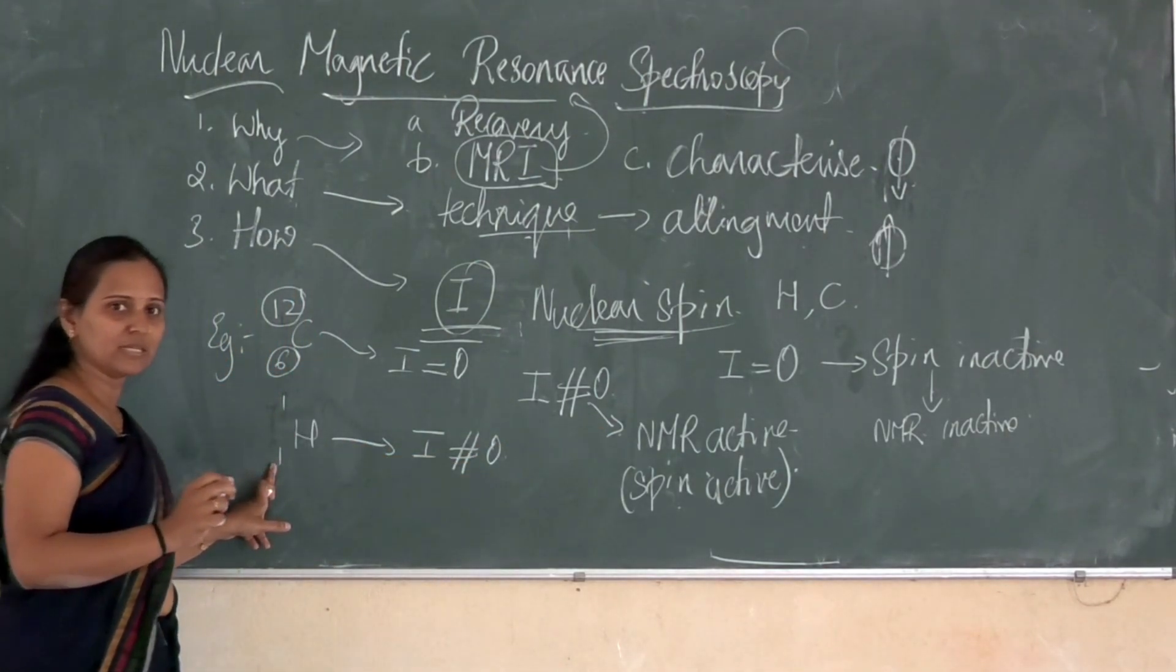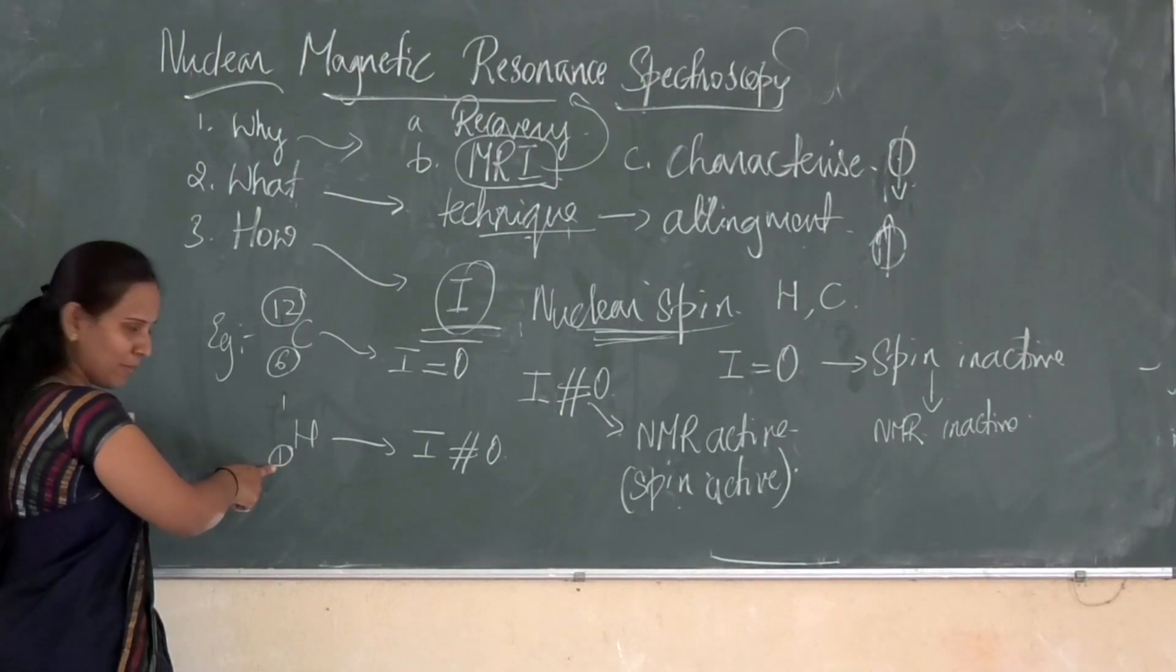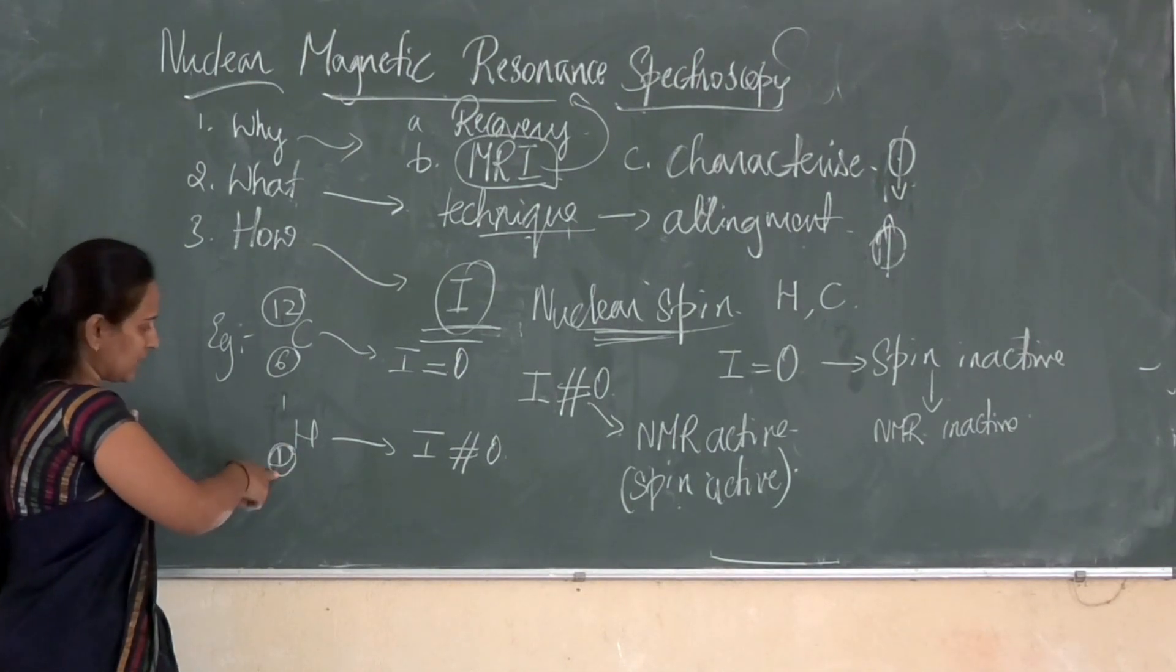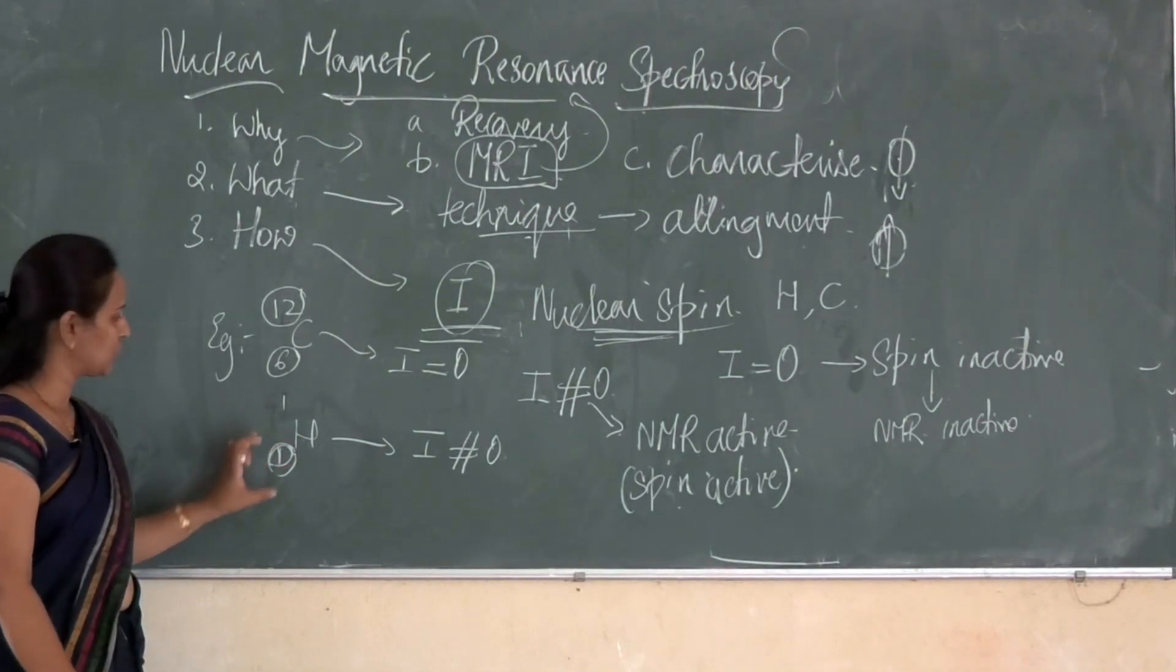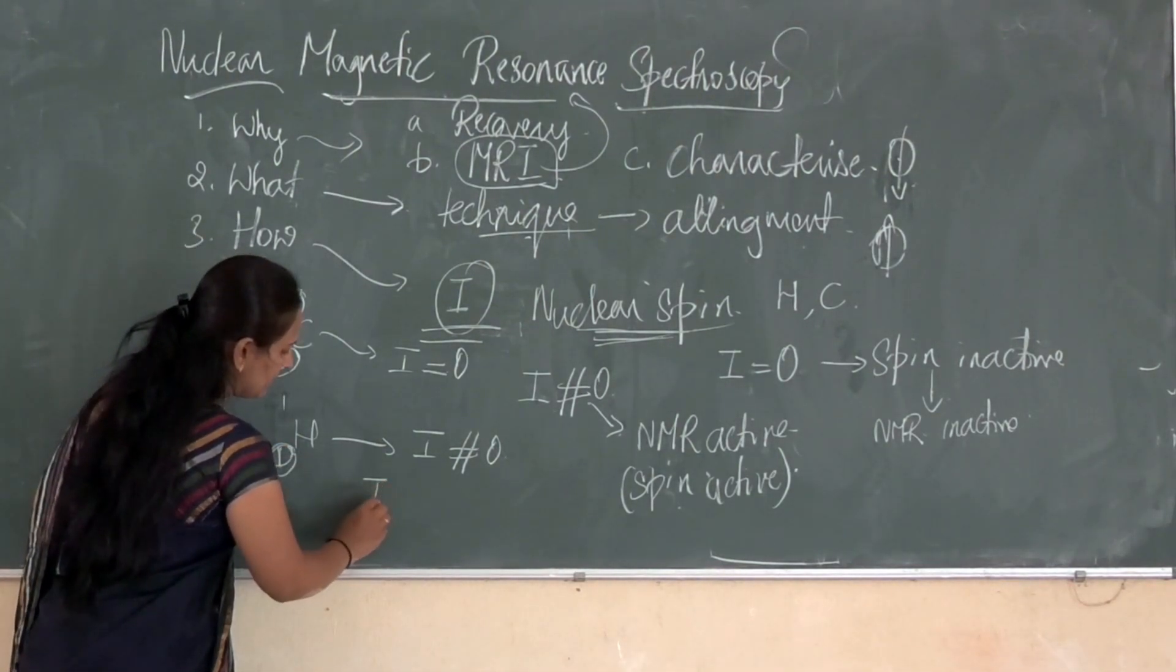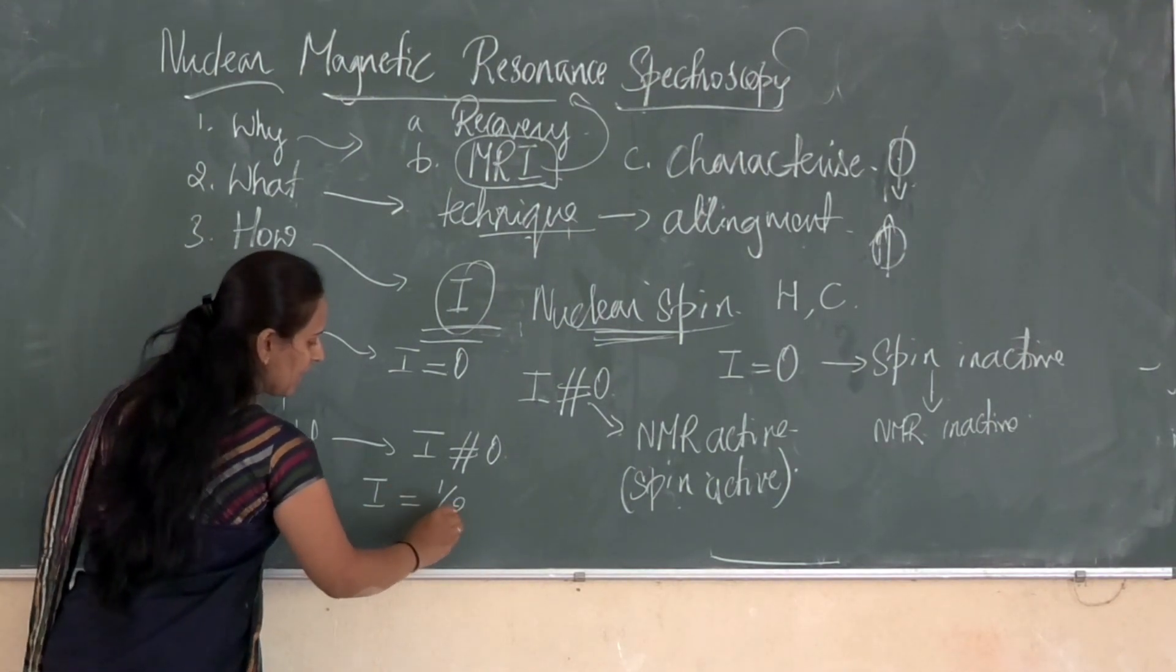Not only mass number and atomic number should be odd. Other than this, the atomic number or the mass number should be odd. One of the number should be odd. Then, if I take example of the same proton, the spin of this proton nuclei is half.